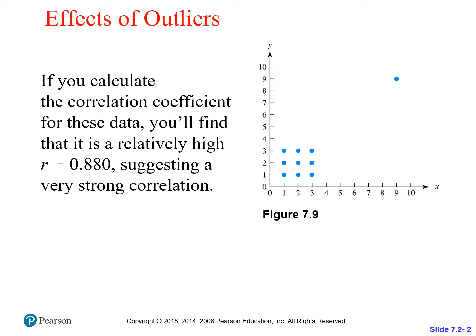Because if you remove that point that's way off up there, you're going to see that you can draw a positive line, a negative line, you can draw whatever you want. So we have to be careful about outliers because they can change things.